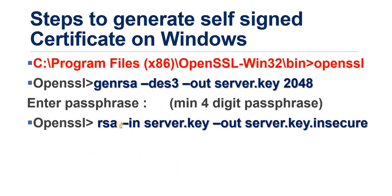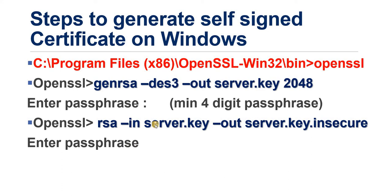Next, create an insecure key (without password protection) from the server.key using the command: 'rsa -in server.key -out server.key.insecure'. Since server.key is password-protected, it will ask for the passphrase again. Enter the same passphrase. You will now have two keys: one password-protected (server.key) and one without a password (server.key.insecure).